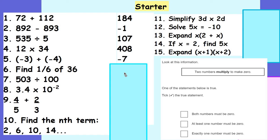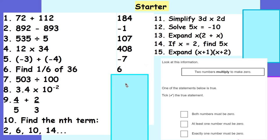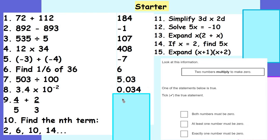To find a sixth of 36, I need to divide 36 by 6, and that would give me 6. 503 divided by 100 gives me 5.03. 3.4 times 10 to the power of negative 2 is standard form, and as an ordinary number that's 0.034. Adding together those two fractions would give me 22 over 15.